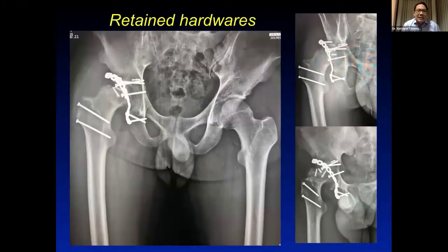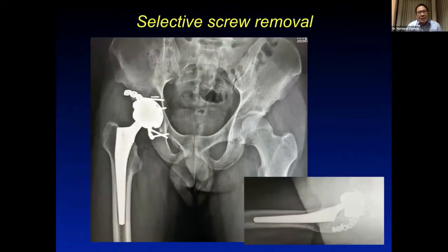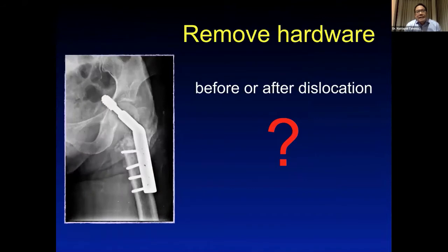For example, in one case with multiple screws and plate hardware at the acetabulum, I removed only the screws obstructing fixation and left the rest. On the femoral side — such as a femoral intertrochanteric fracture — you may need to decide whether to remove the implant before or after dislocation. In that case, the screw was removed before dislocating the hip.